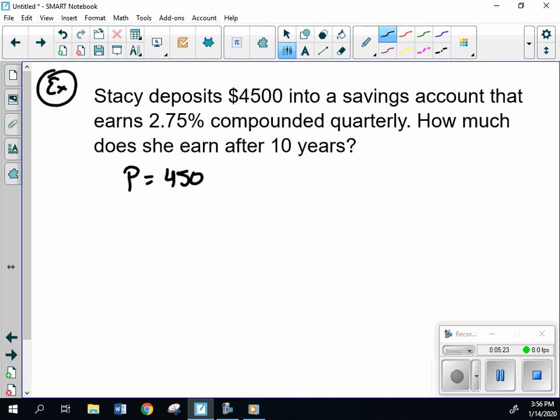P is $4,500. N, quarterly, which means 4. Our rate, it's a percentage, so we'll actually have to change that into a decimal. So it's going to be .0275. T is 10. So now, we just plug it right into that formula.